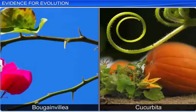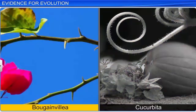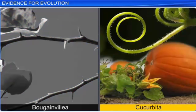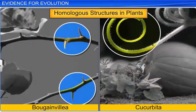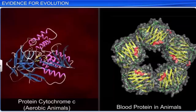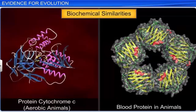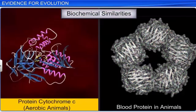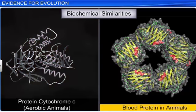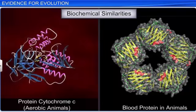Similarly, in plants, the thorns of the bougainvillea and tendrils of the cucurbita represent homologous structures and indicate common ancestry. In the same way, biochemical similarities also point to a common ancestry. For example, similarities in a protein called cytochrome c in all aerobic organisms, and blood proteins in animals, provide evidence that these organisms have descended from a common ancestor.